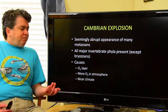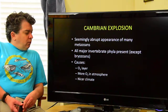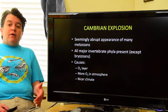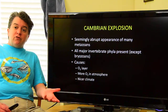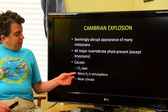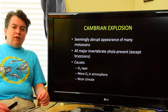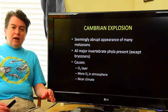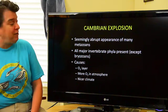Why did the Cambrian explosion happen when it did? Well, there are a few possible causes. There's more ozone in the atmosphere, which offers a measure of protection from UV radiation. There is more oxygen in the atmosphere for these organisms. And remember, we just came out of some Snowball Earth episodes, so it could also be that we simply have a nicer climate at this time.